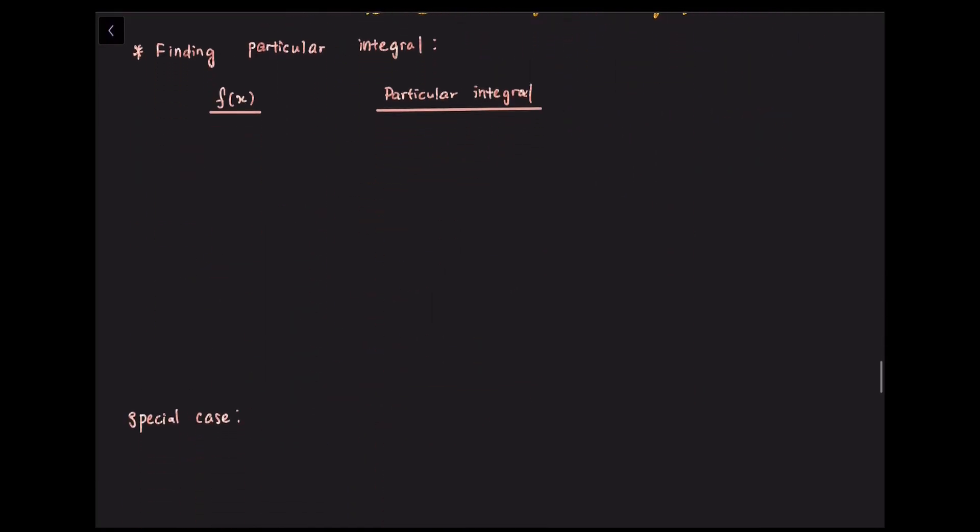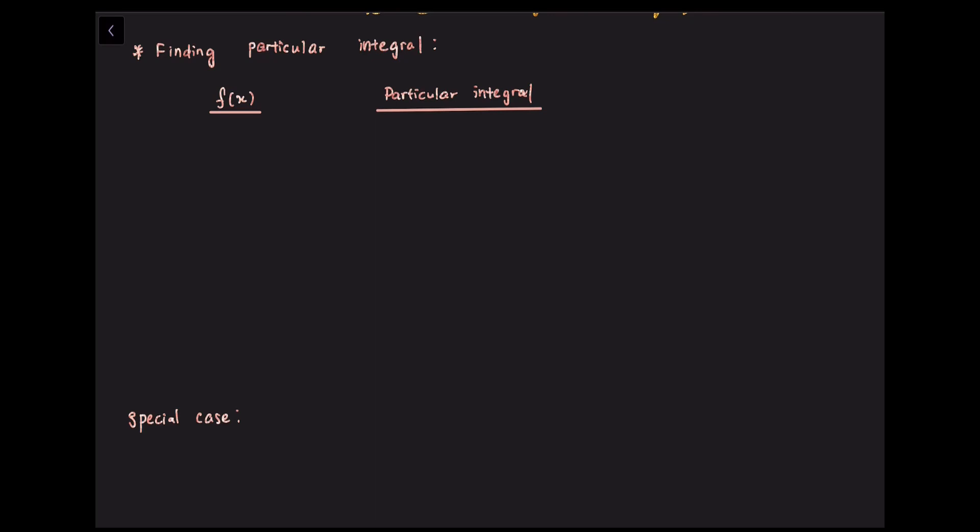When the right-hand side of the second-order differential equation is not zero, then we need to find a function known as the particular integral which satisfies the differential equation. The second-order differential equation a·d²y/dx² + b·dy/dx + c·y = f(x) can be written with the right-hand side split as zero plus f(x), so the general solution can be written as y_CF plus y_PI, where y_CF represents the complementary function and y_PI represents the particular integral.